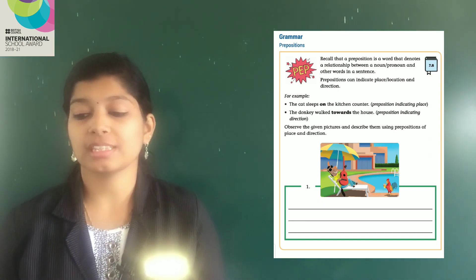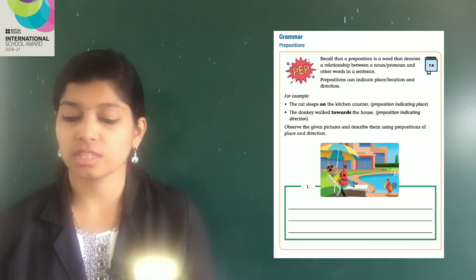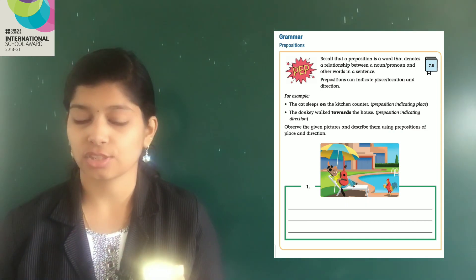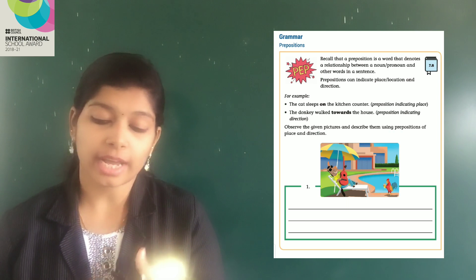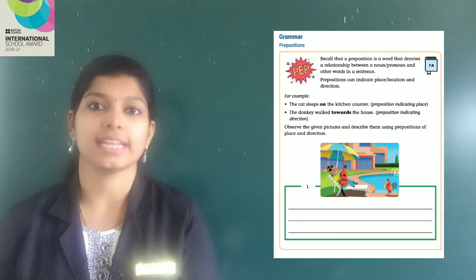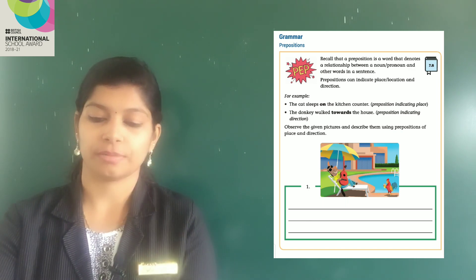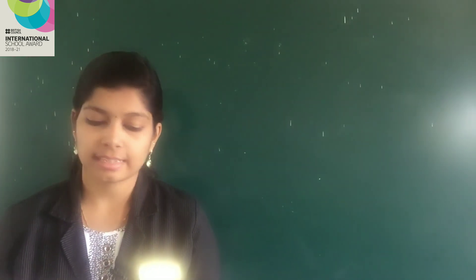Observe the given pictures and describe them using prepositions of place and direction. We saw two examples of place and direction. Using them, after looking at the picture, you have to make sentences indicating place and direction. Now take the next page, page number 20. Here also, three pictures are there. You have to make sentences after looking at the picture using prepositions of place and direction.